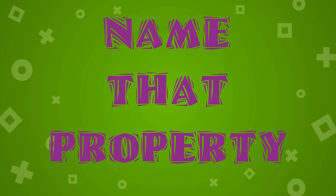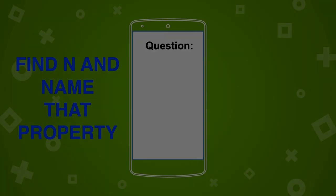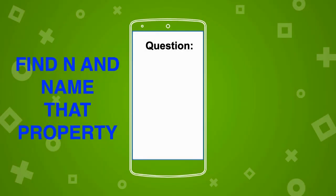Now let's play 'Name That Property!' You'll be presented with a question where you need to find n and also identify the property being used. Let's see if you can do it — I know you can! 3 times n is equal to 7 times 3. Find n and name that property.